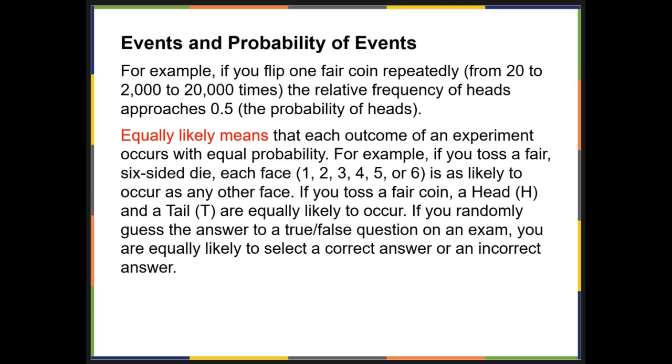Equally likely means that each outcome occurs with equal probability. The same thing goes for a fair six-sided die that has 1, 2, 3, 4, 5, or 6. Each of those faces is as likely to occur as any other face. If you toss a fair coin, head or tail are equally likely to occur. If you randomly guess on a true-false question, you're equally likely to get the correct or an incorrect answer.